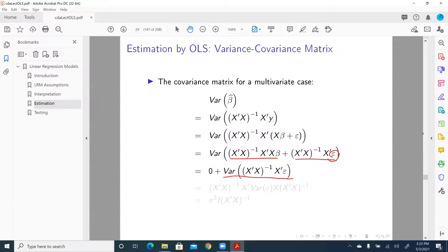That is, epsilon. Every term is not related to or has no correlation with X prime or the X matrix. Of course, it does not have any correlation with beta. So we continue from this term.